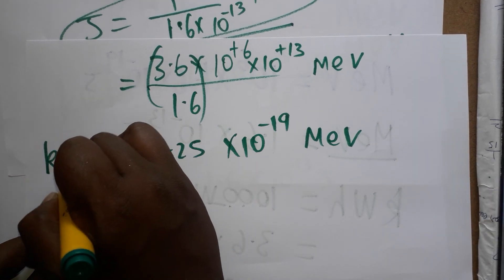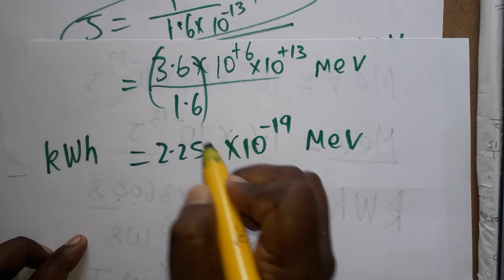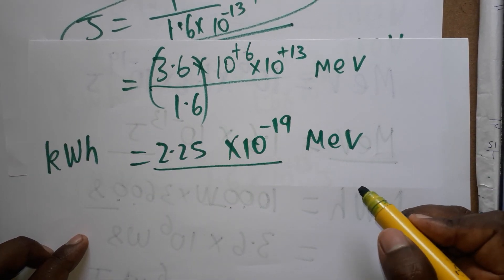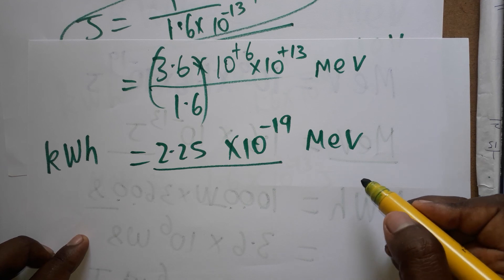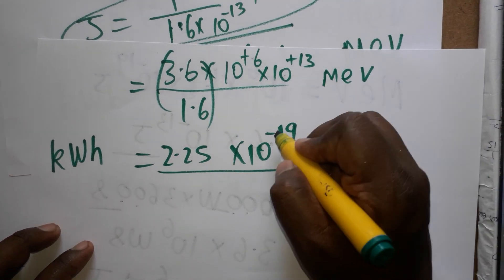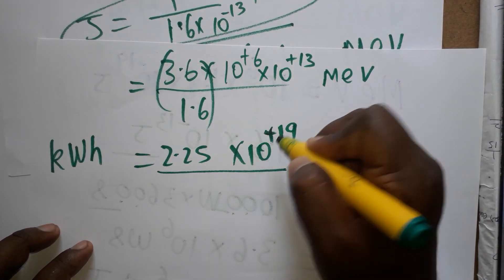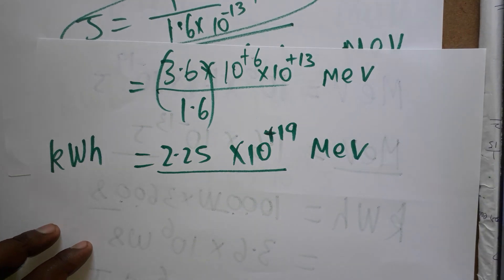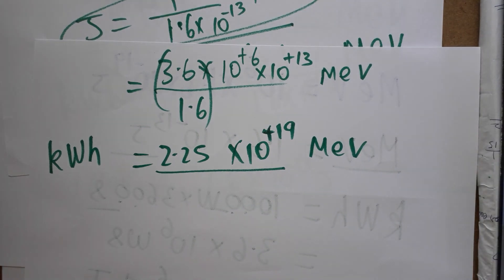So 1 kWh equals 2.25 into 10 to the power plus 19 MeV — it is plus 19, not minus 19. Thank you for watching my video. If you like my channel, please subscribe. Thank you everyone.